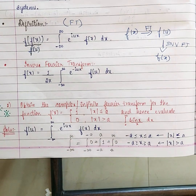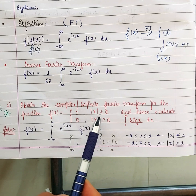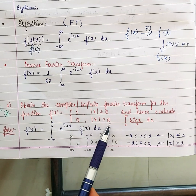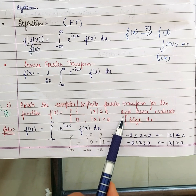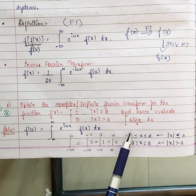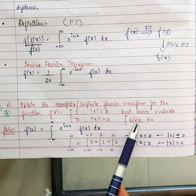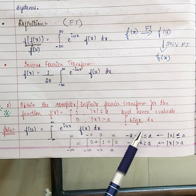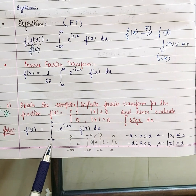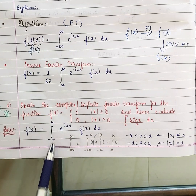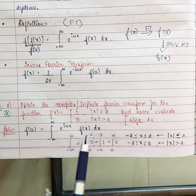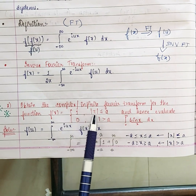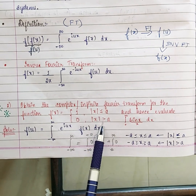Now let us see this interesting problem. Obtain the complex infinite Fourier transform for the function f(x) = 1 when |x| ≤ a, and 0 when |x| > a. Hence evaluate the integral from 0 to infinity of sin(x)/x dx. This integral also appears in MCQ and aptitude problems. Using the definition, we write the integral from minus infinity to infinity of e^(iux) f(x) dx, where f(x) = 1 for |x| ≤ a and 0 otherwise.